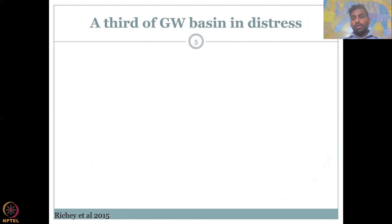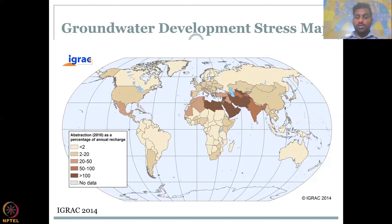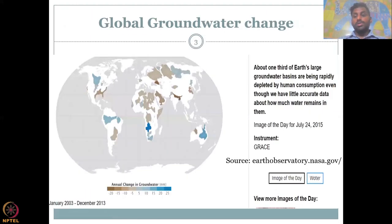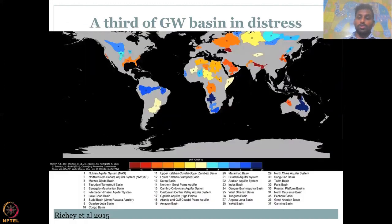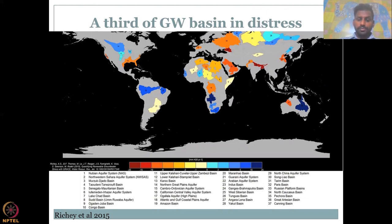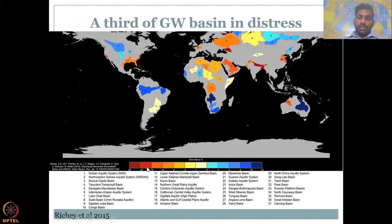Another study, coincidentally done by Richie et al. also using NASA collaborators, showed that one third of groundwater basins are in distress — similar findings to the IGRAC 2014 and NASA 2015 studies. What you can notice here is the labeling of where these major aquifers are. For example, taking the Indian region, number 23 is the Indus Basin, which is in the negative.